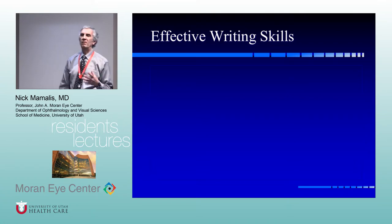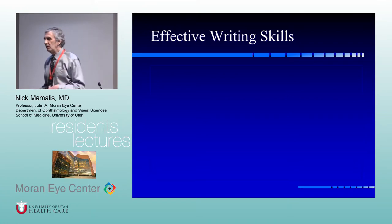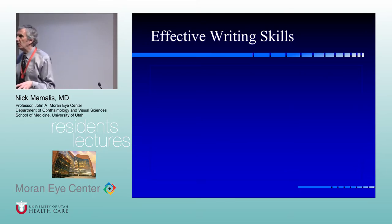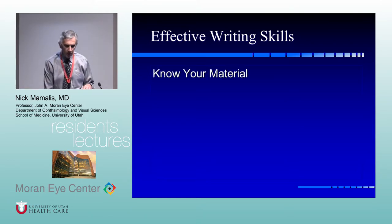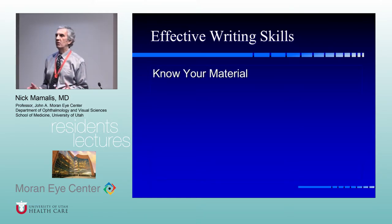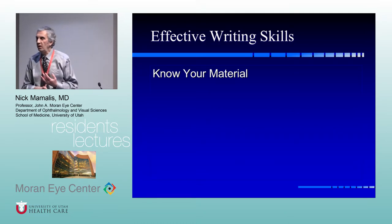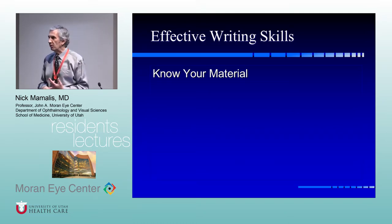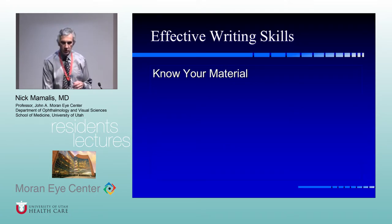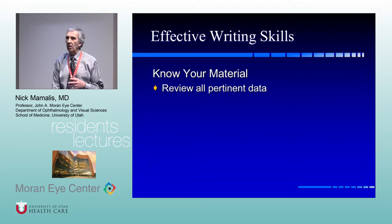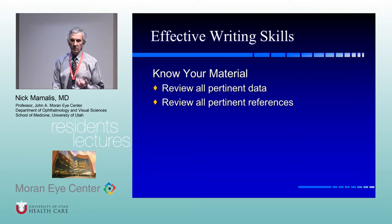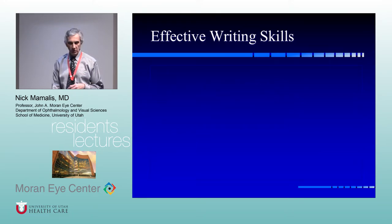We talked a little bit about giving talks — it really flows over into how to write a paper. And to be honest, it's the same skills. What did we say when you first put together a talk? Know your material. When you're writing a paper, it's even more important. You've got to know your material before you sit down to write. Review your data, look at the references, get those done ahead of time. Read your statistics, make sure they're valid.